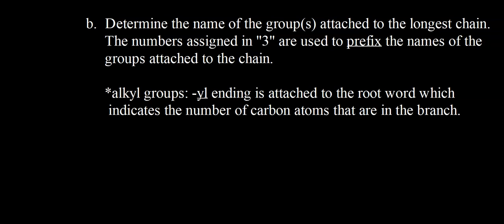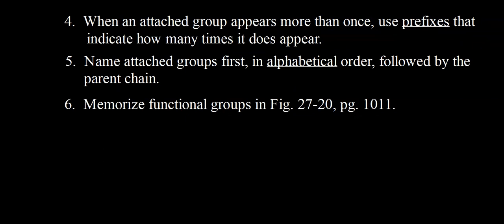When the same branch or functional group appears multiple times, use prefixes: di (2), tri (3), tetra (4), penta (5). For example, two chlorines gives dichloro, three methyls gives trimethyl, four iodines gives tetraiodo. Attached groups are named in alphabetical order — so chloro comes before methyl, bromo before iodo, amino before nitro. Be sure to memorize the functional groups from the handout, as you will not be able to use it on your test.